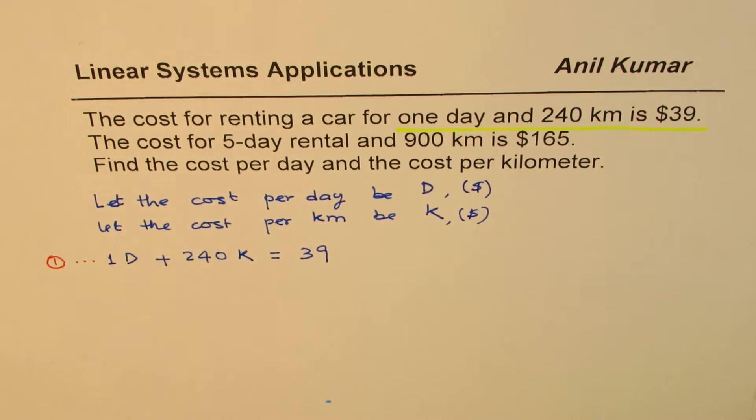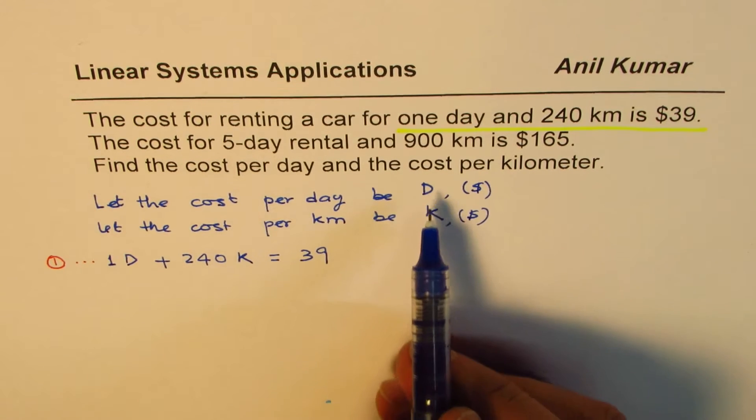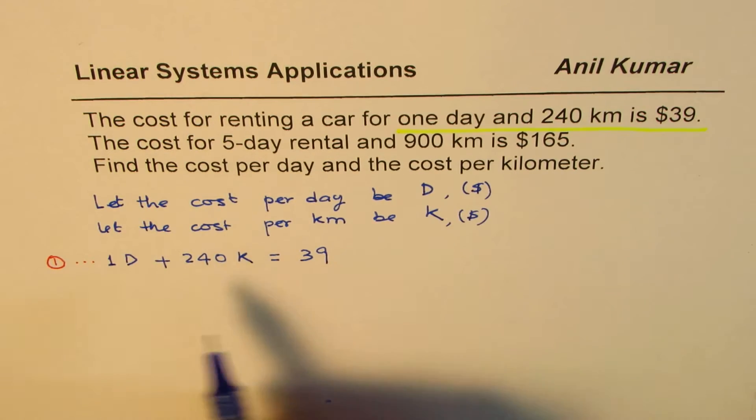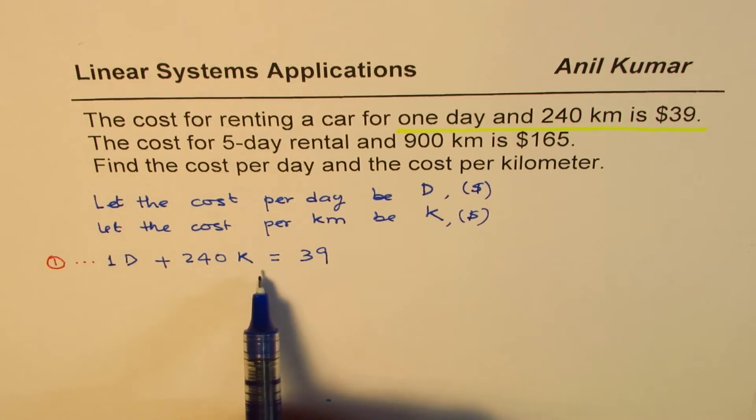We'll number this as our equation number one. Treat this as one of the first questions which you are doing on this kind of an application. And then see how it works. Relevant variables, D for day, K for kilometer, make sense. Read slowly and then move on as we are doing.